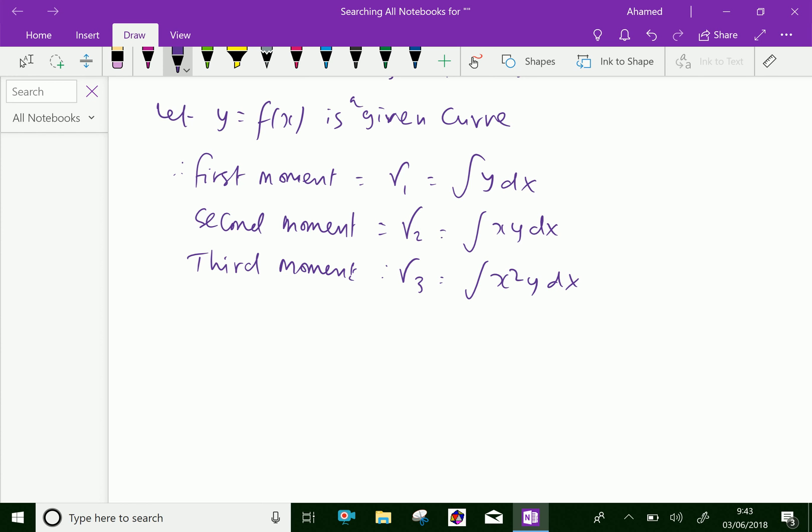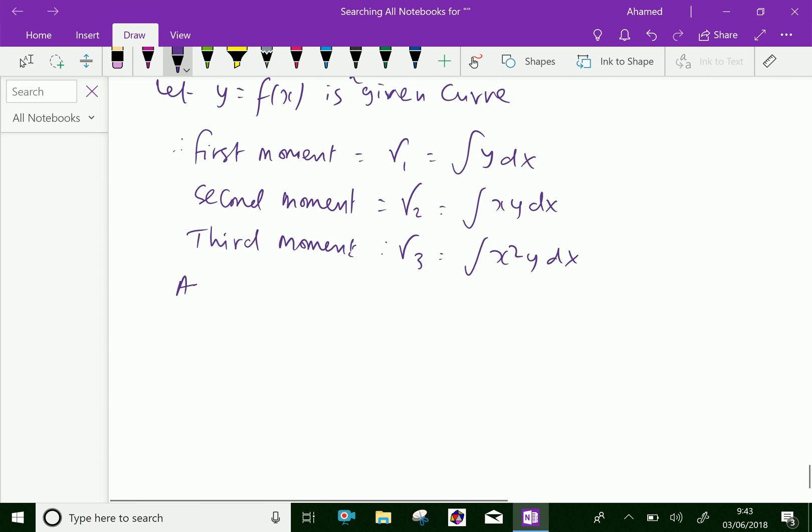The method of moments is based on the assumption that μ₁ = γ₁, μ₂ = γ₂, μ₃ = γ₃.